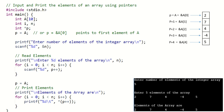This is a program to input and print the elements of an array using pointers. This is array A of size 10 and the pointer P is used to point to the array. We are inputting five elements: the first element is A[0], second is A[1], third is A[2], fourth is A[3], and fifth is A[4].